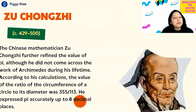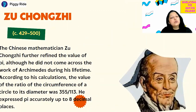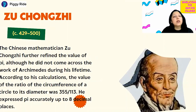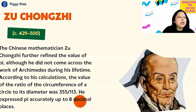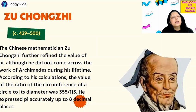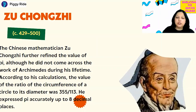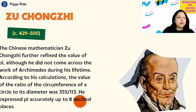After this, Chinese mathematicians took the value of pi as 355 by 113 and expressed pi accurately up to eight decimal places. Pi is an irrational number, which means it has a non-terminating decimal expansion. The Chinese expressed pi up to eight decimal places.